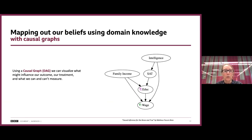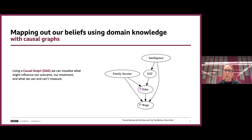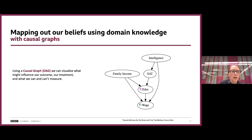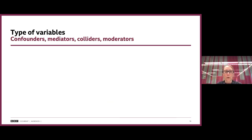A really good thing to do when starting a causal inference project is to map out your beliefs using domain knowledge via a causal graph — a directed acyclic graph where you plot everything you think is influencing the outcome and the treatment, and identify things that are important but can't be measured directly, for which you might need a proxy variable. For example, in a graph, we might not be able to measure intelligence directly, but ACT results could be a good proxy.